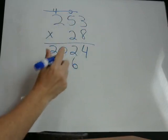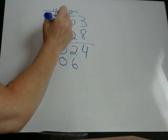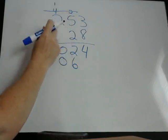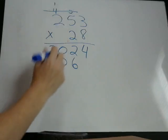2 times 5 is 10. So again, we write that, or we're going to carry the 1. 2 times 2 is 4, plus that 1 is 5.